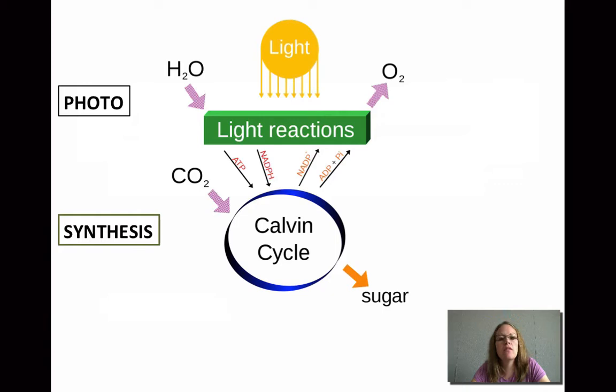So if we break down, I like to think of photosynthesis in two parts. The first part is the photo part, and the second part is the synthesis. Photo meaning light. These are our light reactions. And what we need for these light reactions is water and light. And then what we have is the byproduct of oxygen leaving.